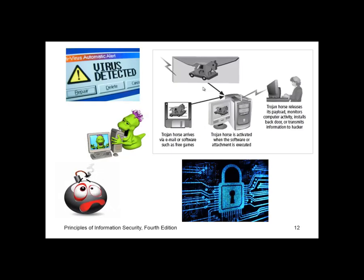Computer viruses are segments of code that perform malicious actions. This code behaves much like a biological virus pathogen attacking animals and plants, using the cell's replication machinery to propagate and attack. The code attaches itself to an existing program and takes control of that program's access to the targeted computer. The virus-controlled program then carries out the virus's plan by replicating itself into additional targeted systems.